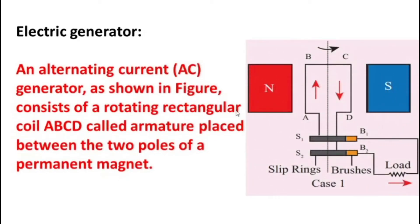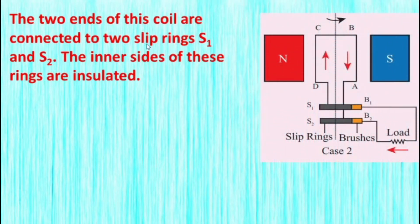See the diagram. An alternating current AC generator consists of a rotating rectangular coil ABCD — called the armature — placed between the two poles of a permanent magnet: north pole and south pole. The two ends of this coil are connected to two slip rings, S1 and S2. In an electric motor we use split-type rings, but in an electric generator we use two slip rings.